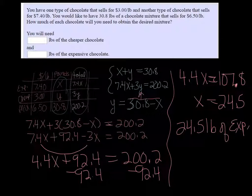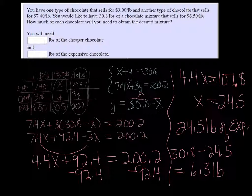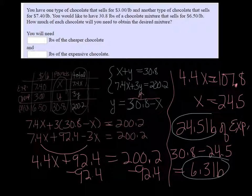And the other one would be 30.8 minus that. Because we needed a total of 30.8 altogether. So the cheap chocolate, we need 6.3 pounds. And this makes sense because it did seem like we were going to need more of the expensive chocolate in order to have one that's $6.50 a pound. Thank you very much.